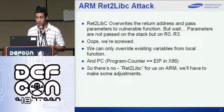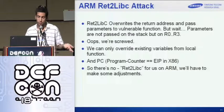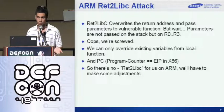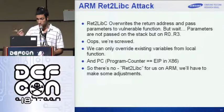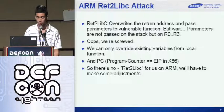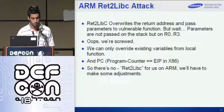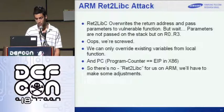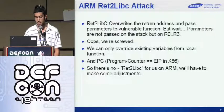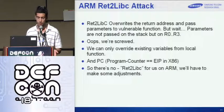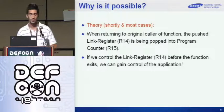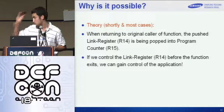So: overwrite the return address and pass parameters to a vulnerable function. But we can't pass parameters on the vulnerable function because we need to store it in the R0 register. We can only override existing variables from the local function. It usually depends on which function has the vulnerability. We can also override the PC, the program counter — that's what we'll use to get full control of the application.